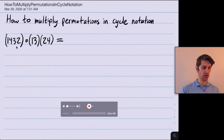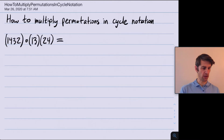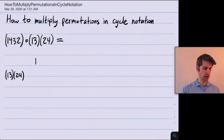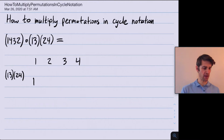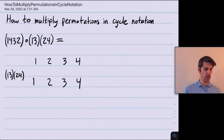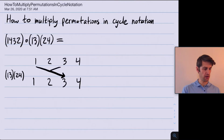So let's draw out what each of those functions does. This first function (1, 3, 2, 4) acts on the elements 1, 2, 3, and 4 — it's a permutation, so it sends them to some reordering of themselves. It sends 1 to 3, 3 back to 1, 2 to 4, and 4 back to 2.